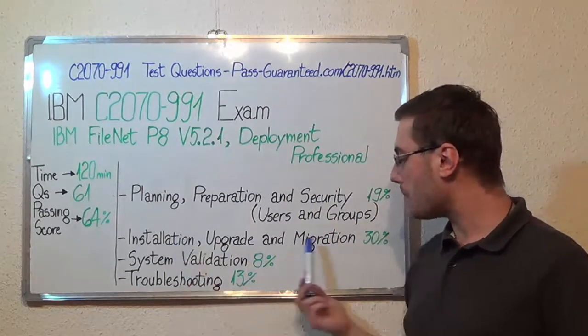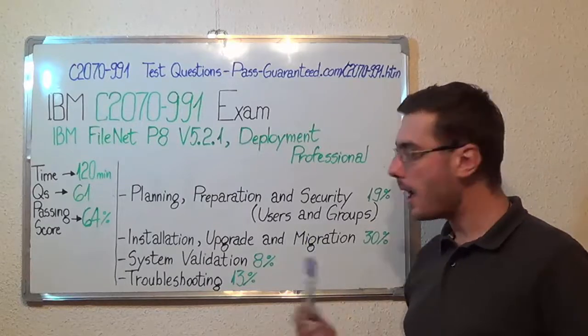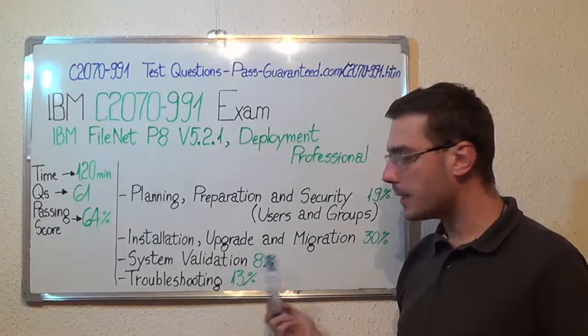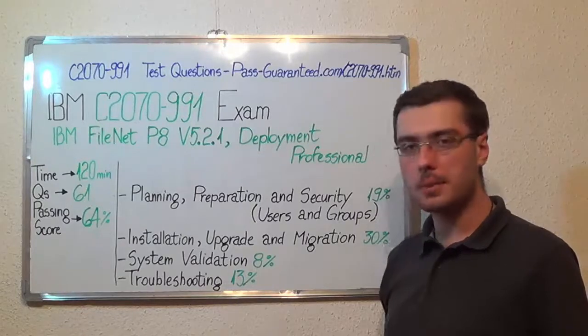Second, installation, upgrade and migration with 30%, after that, system validation with 8% and the last one, troubleshooting with 13%.